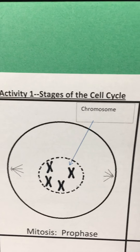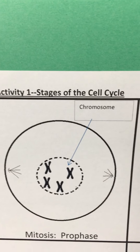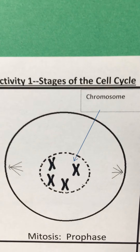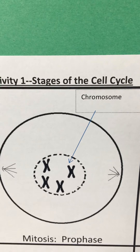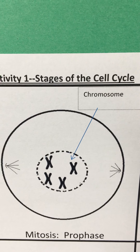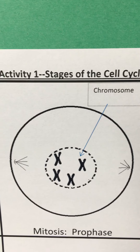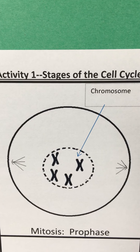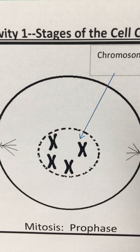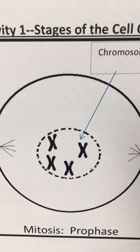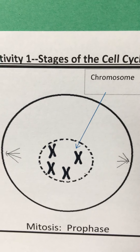Next would be prophase. Here we see that DNA is becoming dense and forming a structure that most people are familiar with: the chromosome. The human cell has 46 of these chromosomes, but you can also notice that the nuclear membrane is starting to disappear.